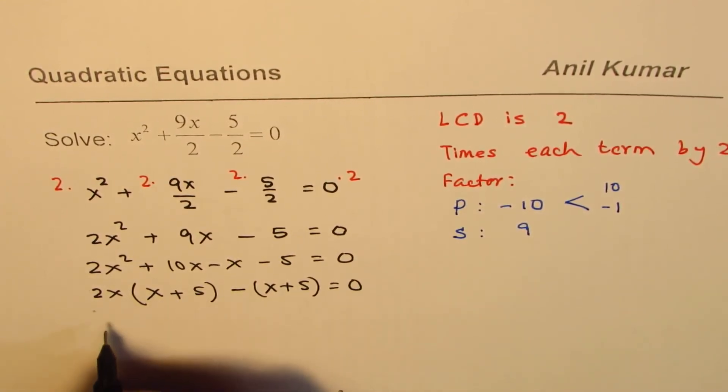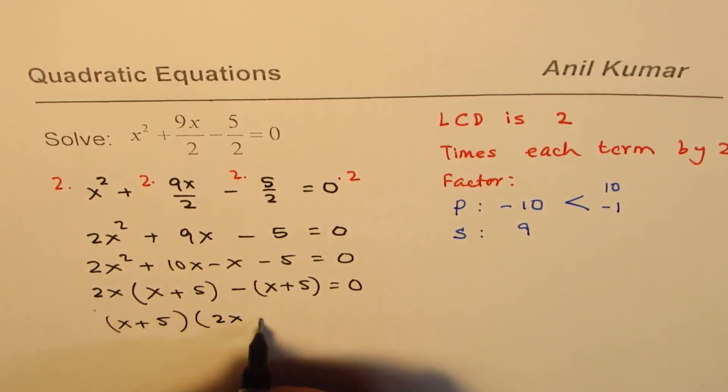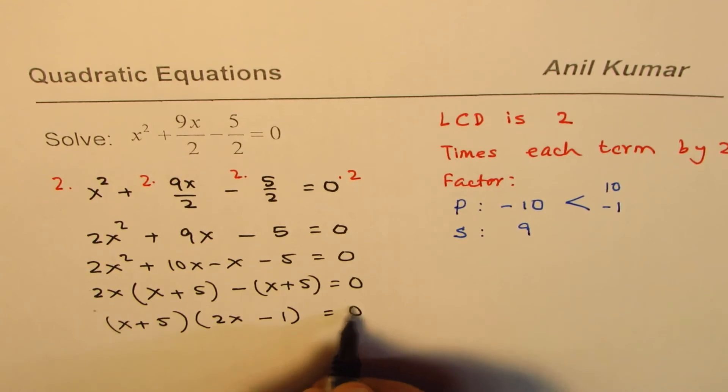Now x + 5 is a common factor, so we write (x + 5)(2x - 1) = 0.